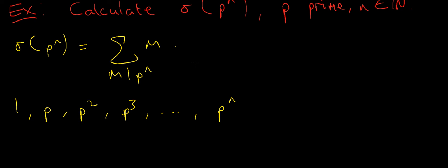This is because 1 times p to the n is p to the n, p times p to the n minus 1 is p to the n, p squared times p to the n minus 2 is p to the n, and so on, all the way up to p to the n.